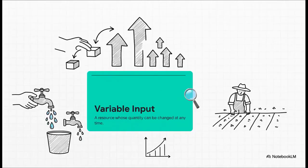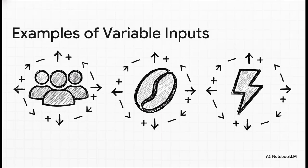On the other side of the coin, you've got your variable input. This is the stuff you can control. You can change the amount you use pretty much anytime you want. Back to our taxi, the drivers are the variable input. You can hire more, you can schedule fewer shifts. It's flexible. For a coffee shop, it's things like the coffee beans you buy or how much electricity you're using. These are the dials you can actually turn up or down day to day.